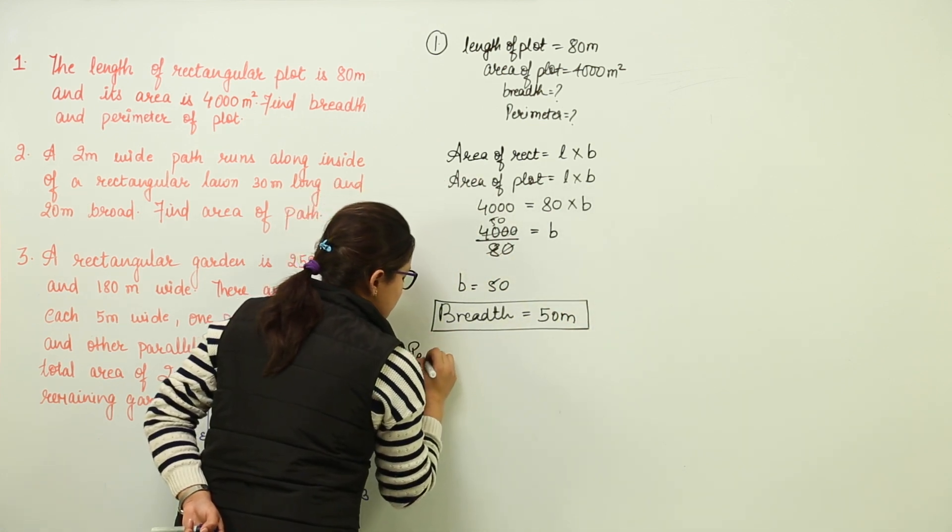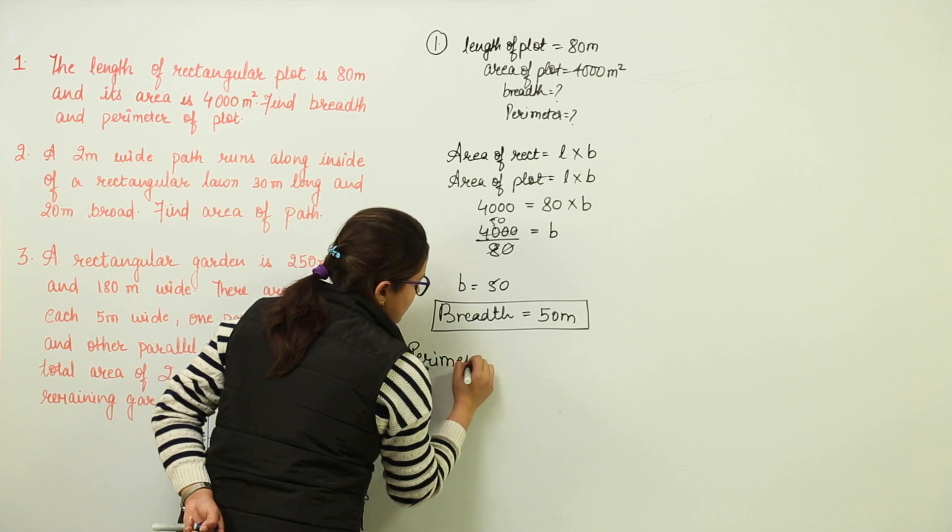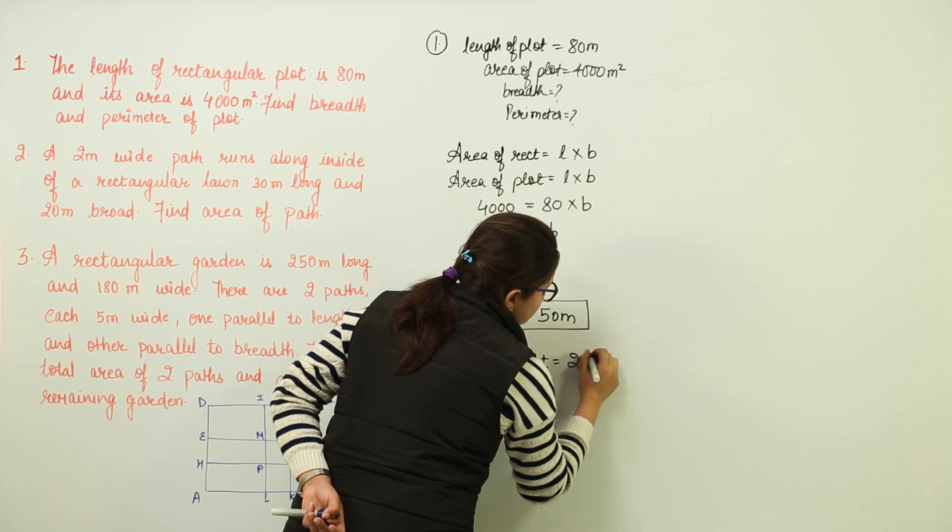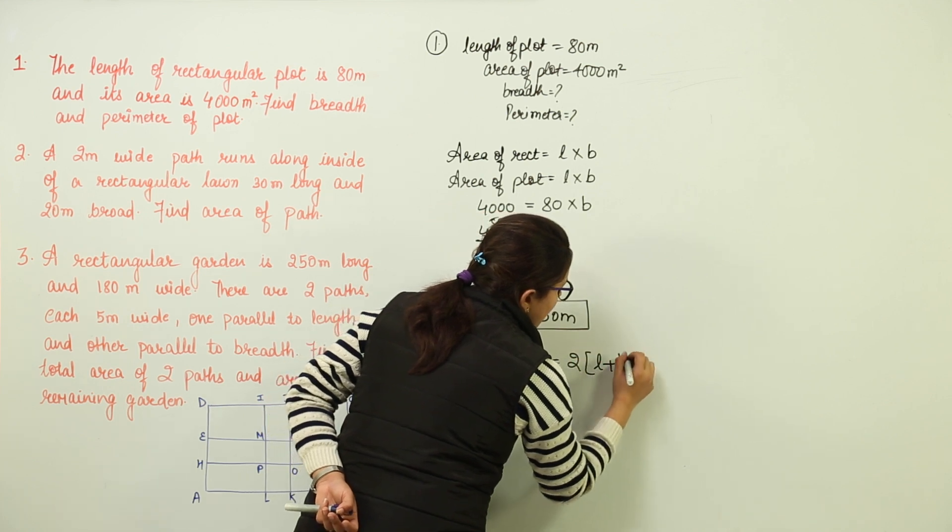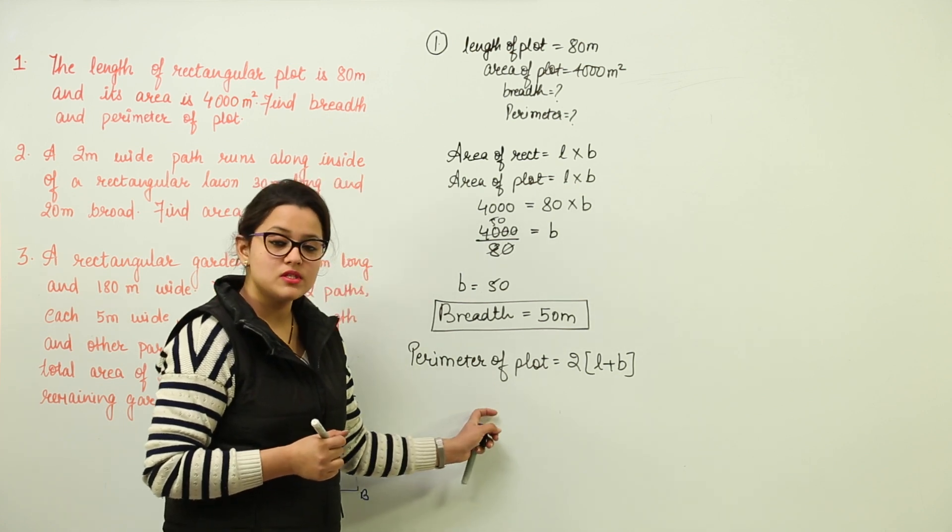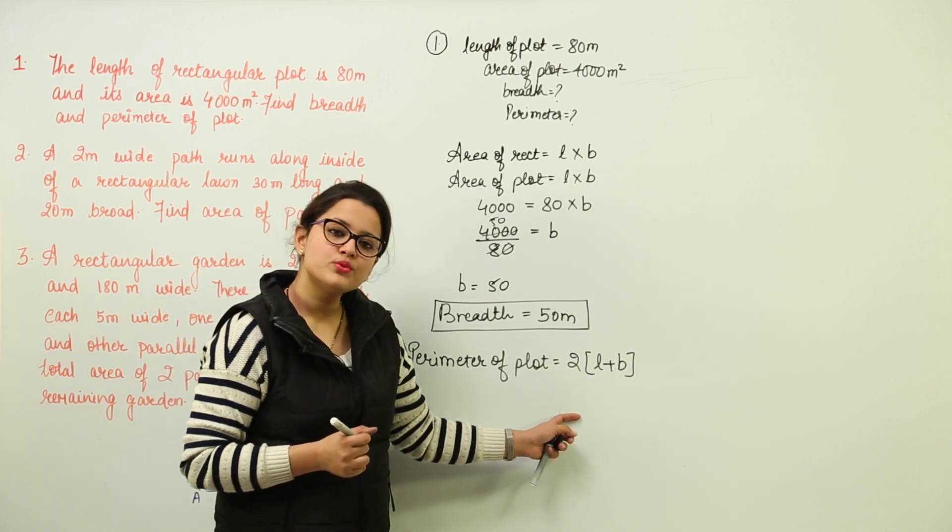Now as we have got the breadth, it becomes easy for us to calculate the perimeter also. As we know that perimeter of plot is going to be 2 into L plus B only. How do we come to know? Because the plot was rectangular in shape and we know that perimeter of rectangle is equal to 2 into L plus B.